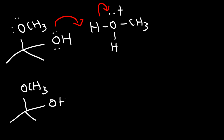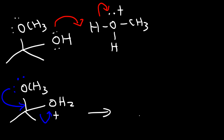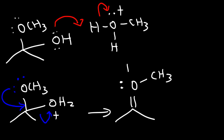We want the OH group to be a good leaving group because we need to get rid of it. So let's take a lone pair from oxygen of the OCH3 group, form a pi bond, and kick out water. This arrow should be pointing towards the oxygen atom.